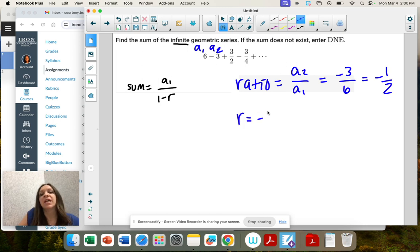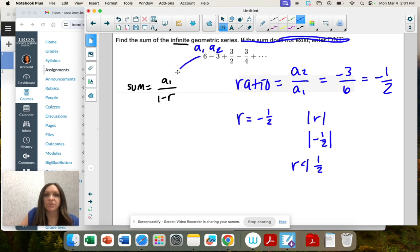So r is negative 1 half. If we take the absolute value of r, that makes it positive 1 half, and that is less than 1. Because it's less than 1, it does exist. If it were greater than 1, it would not exist. So we're moving on: r is negative 1 half and the first term is 6.